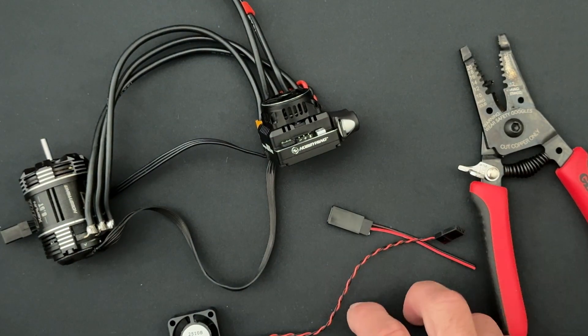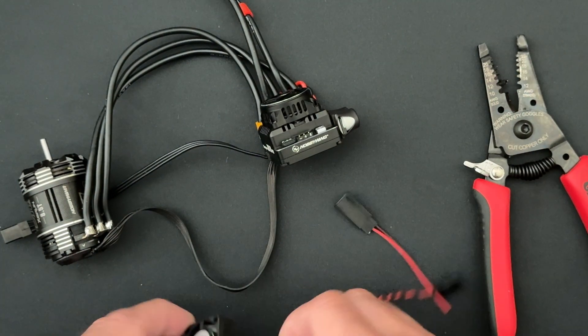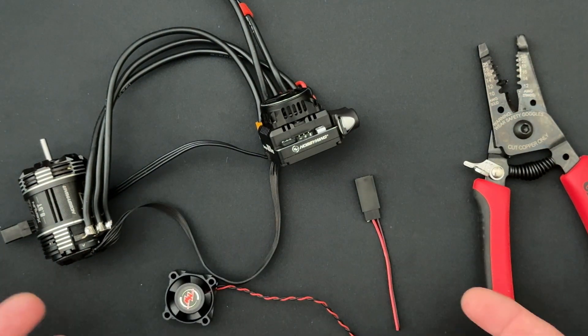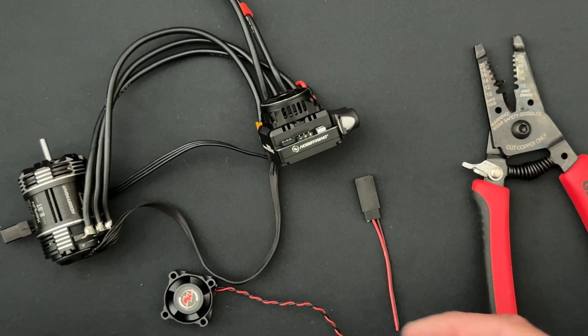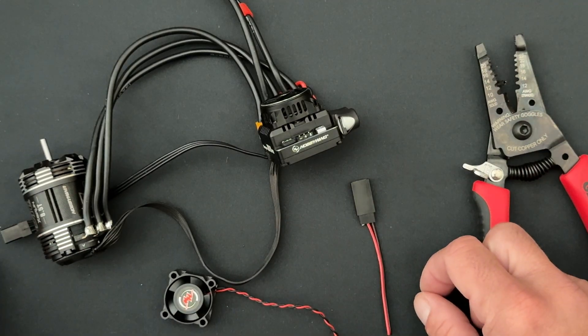That can lead to a couple operational issues where the speed control doesn't want to turn off after the race because some of the aftermarket fans draw a ton of power, more than the switch is able to turn off. But you can just unplug the speed control and it turns off just fine.